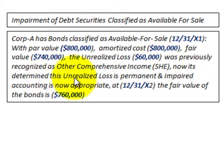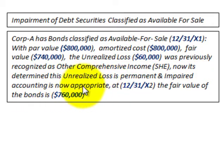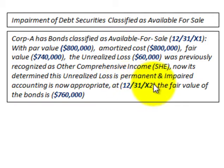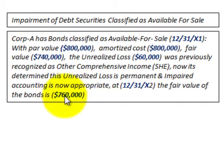Now it's determined that this unrealized loss of $60,000 is permanent, and impairment accounting is now appropriate. We're also going to look at our next reporting period, 12-31-X2, where the fair value of the bonds is $760,000.